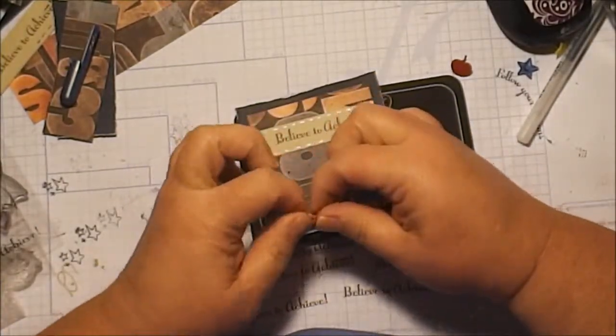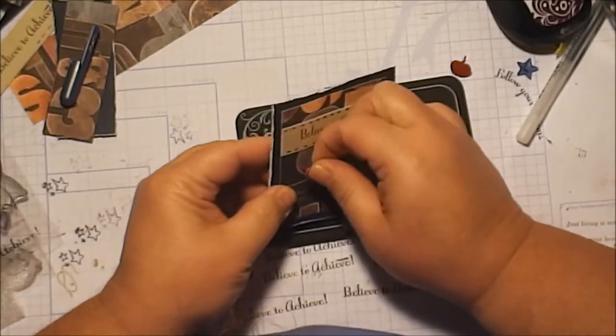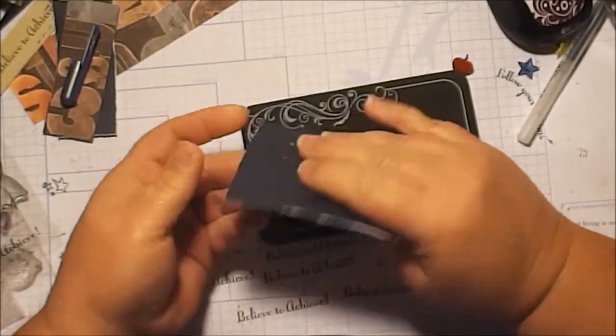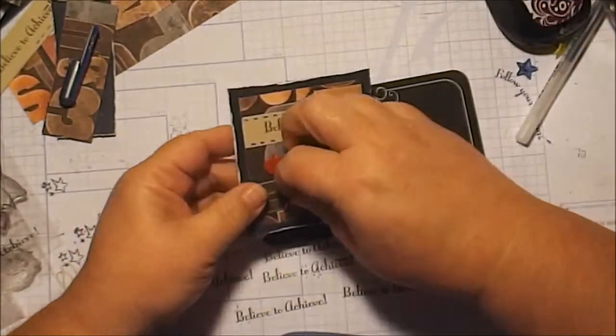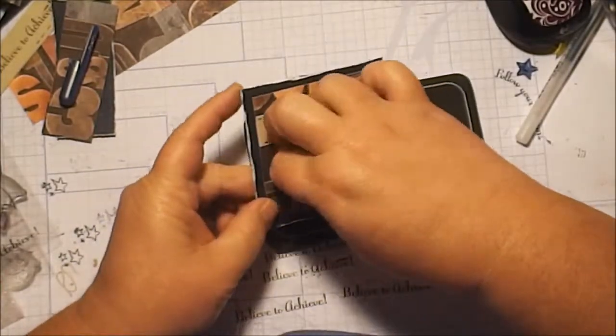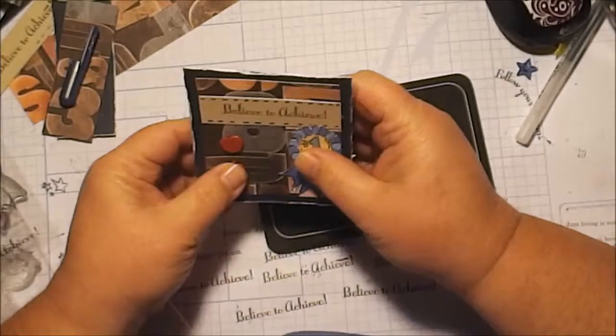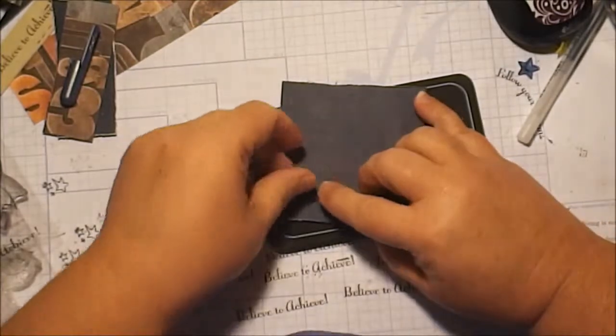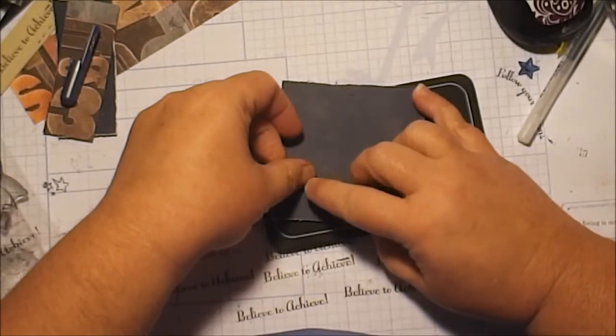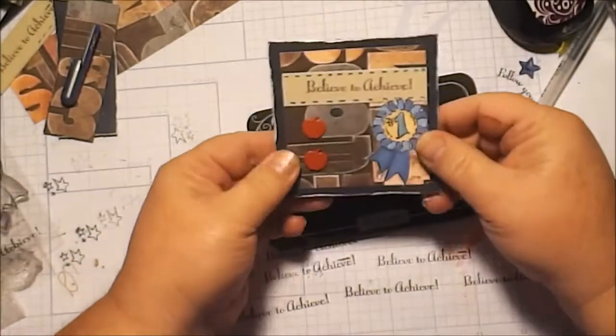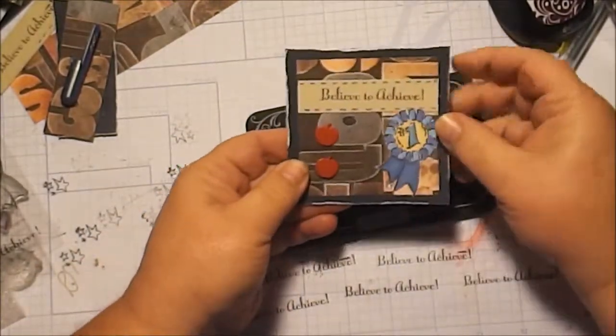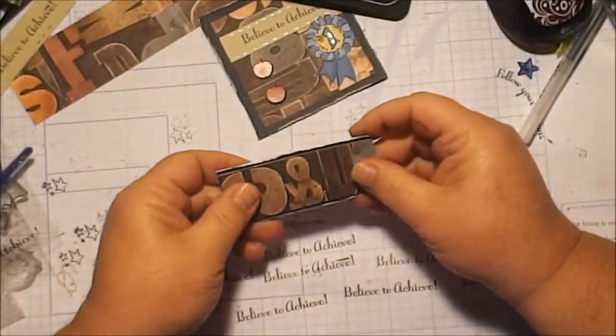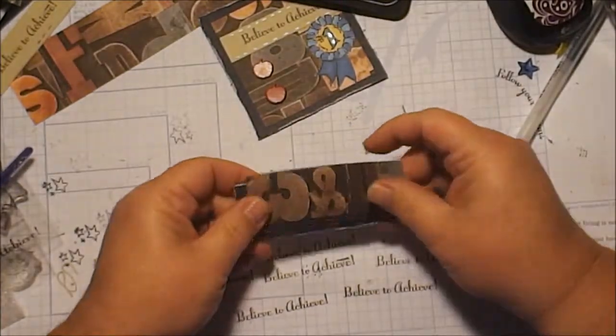I don't even know where I got these. I've had them forever in my little brad box. I was looking for things to use on this and I thought, oh, that'll work. And then on the bottom I also had some stars. I'm going to put that going across the bottom. Okay, so there's my top. Let's straighten that guy out a little bit. Here's my top. Here's my bottom. Put that down.